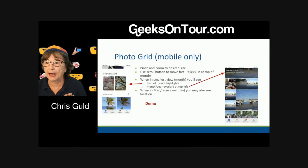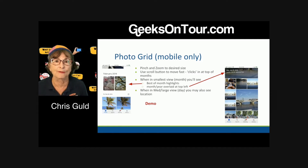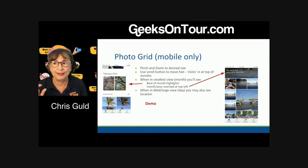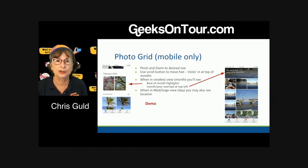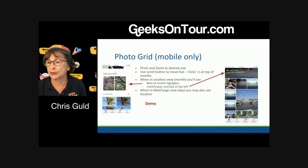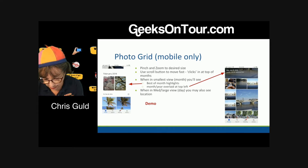What do I mean by photo grid? It's on mobile only. You do have the photo grid on the web, but you don't have any control over it. On the phones, you have control — you can pinch and zoom, you can use the scroll button to move fast. You've always had those things. What's new is the date is overlaid right on the screen, and we now have these 'best of month' for past months. Let me show you what I'm talking about.